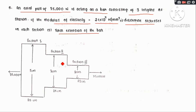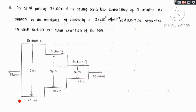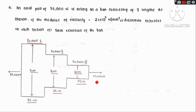In this figure, we have varying cross-sections with different lengths and diameters, and an acting load of 35,000 N. The bar has 3 sections: Section 1 has a diameter of 5 cm and length of 20 cm; Section 2 has a diameter of 3 cm and length of 25 cm; Section 3 has a diameter of 2 cm and length of 25 cm. The load of 35,000 N is applied at the end.